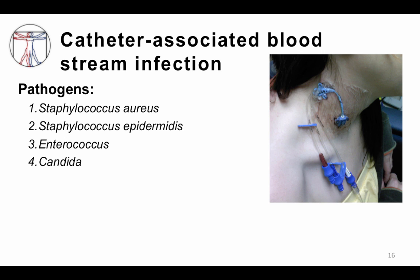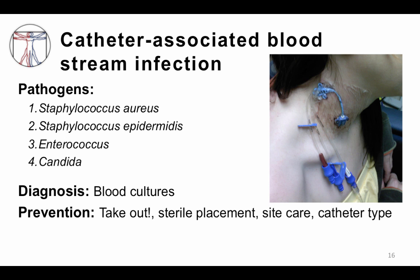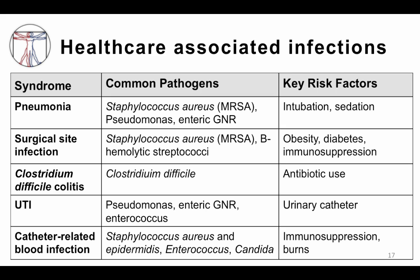Usually it is bacteria on the skin that escape around the catheter and cause infection, though occasionally bacteremia from other sites may deposit on the catheter. The most common pathogens are skin-dwelling organisms: Staphylococcus aureus, Staphylococcus epidermidis, Enterococcus, and Candida. Diagnosis is made by blood cultures — drawing blood from the catheter and sending it for culture. Prevention: avoid placing a catheter in the first place, remove catheters as soon as they are no longer needed, and use sterile placement and sterile site care.